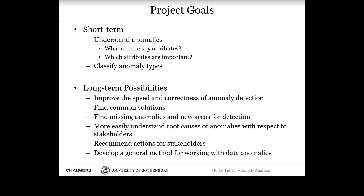What we're really aiming towards is to improve the speed and correctness of anomaly detection, find common solutions, find missing anomalies in new areas for detection, understand root causes with respect to stakeholders, recommend actions — for example, if a past anomaly was fixed in a certain way and a new anomaly has a similar classification, perhaps the old fix applies — and to develop a general method for working with data anomalies.